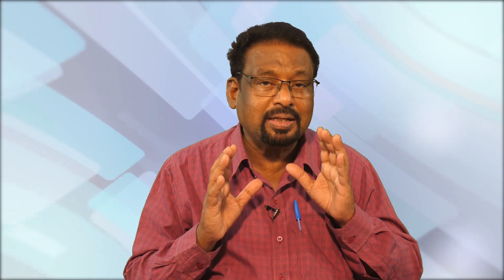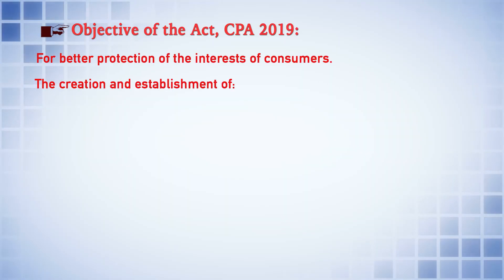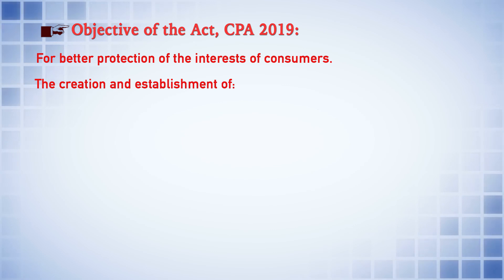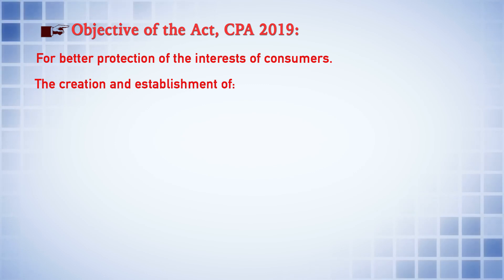There is not much difference with the objective of the Consumer Protection Act 1986 vis-à-vis the 2019 Act. Primarily, the Act aims for the betterment of the interest of consumers. The primary objective is to protect the interest of consumers in all aspects, and for this purpose the law provided for the creation and establishment of various institutional mechanisms.